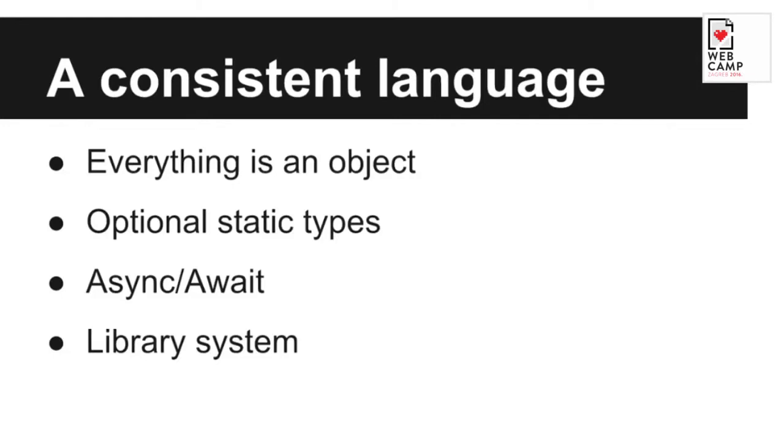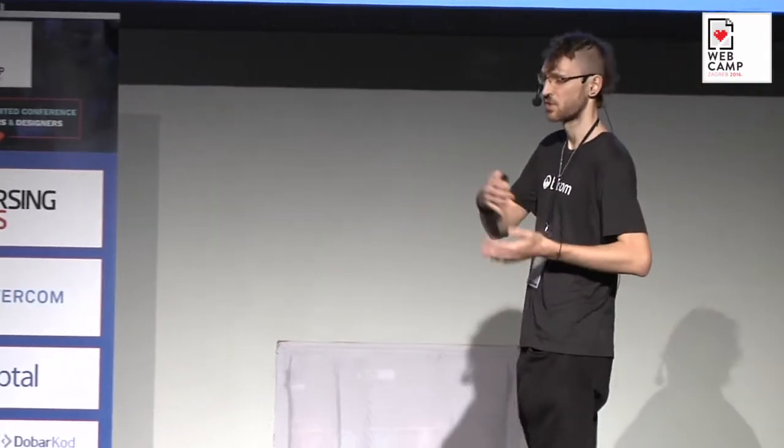A few examples of what I like about Dart as a consistent language: everything is an object — much like Java, but actually a bit more, because strings are also objects. Then there's optional static typing — you can type everything, or just type your public API, using var for dynamic typing internally, or omit types altogether like you would in JavaScript or PHP. There's also async/await built in as a first-class citizen, and a library system where you can import and export libraries — it's all built in, no workarounds needed.